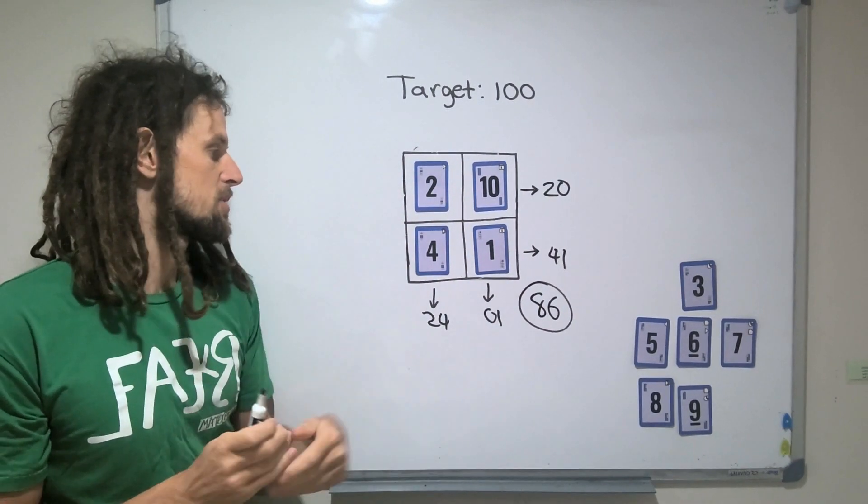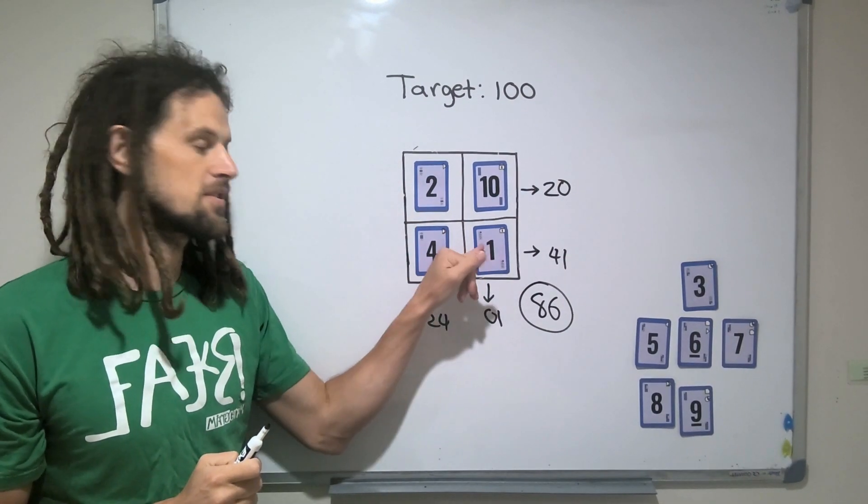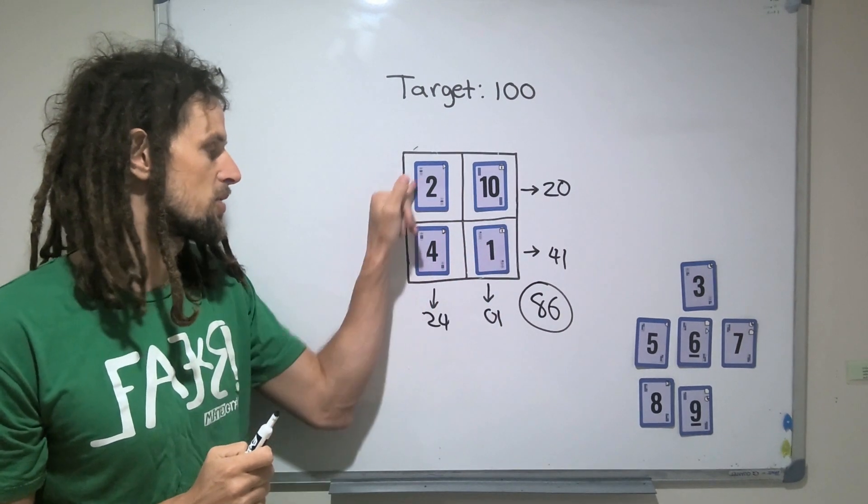And if we think about where the numbers are positioned, this number has a bigger effect on the total than this number here, because this is in both tens columns.